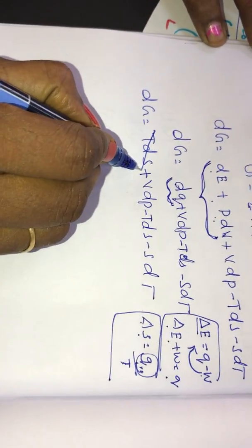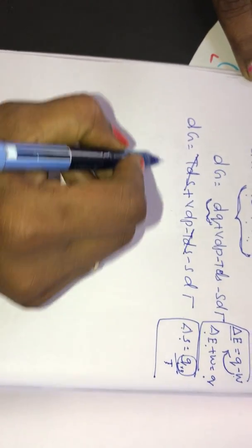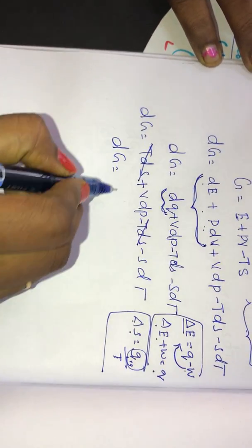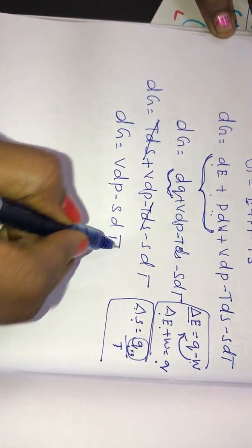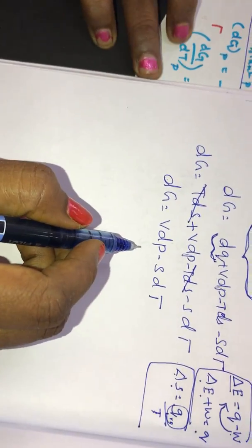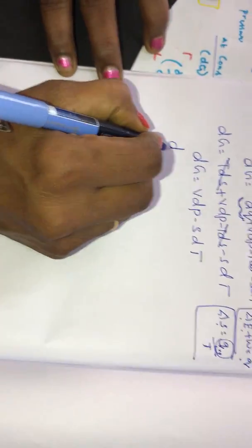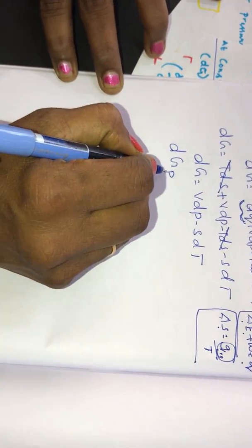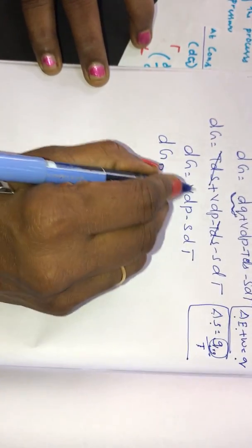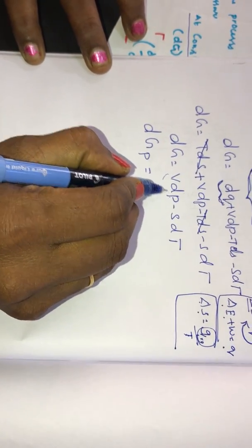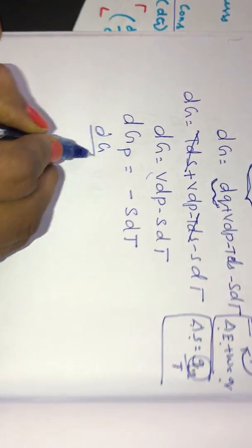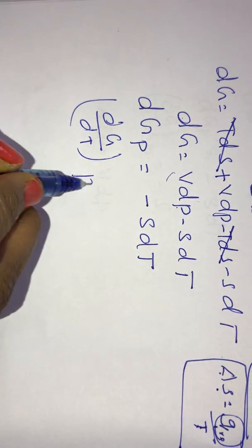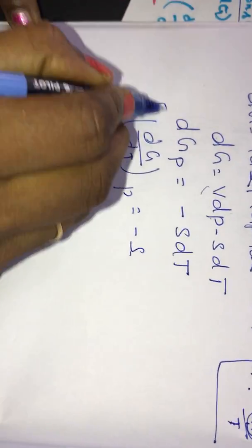We can strike out T dS and minus T dS, so dG reduces to dG equal to V dP minus S dT. At constant pressure, dP is equal to zero, so this term vanishes and we get dG equal to minus S dT. This can be written as the partial derivative of G with respect to T at constant pressure equals minus S.